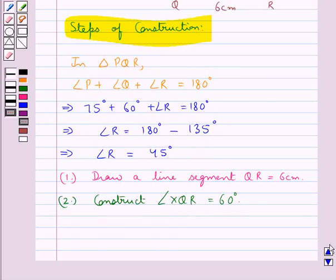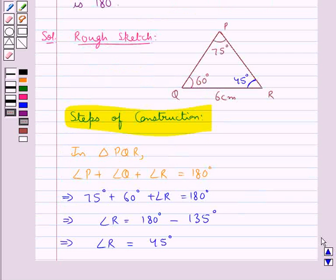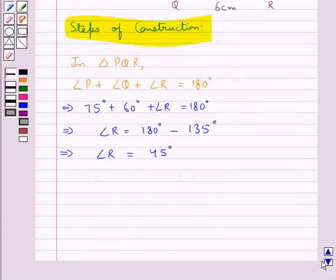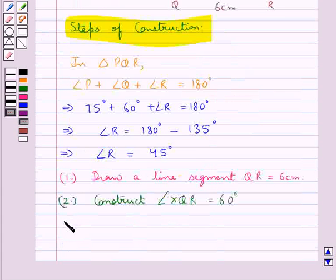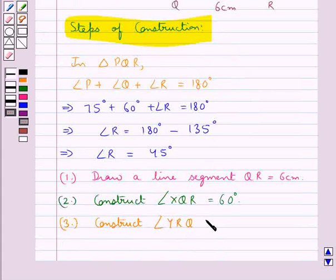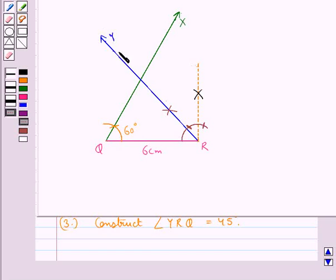As we found in the rough sketch, angle R is 45 degrees. So our next step is to construct angle YRQ of measure 45 degrees. This angle YRQ is of measure 45 degrees.